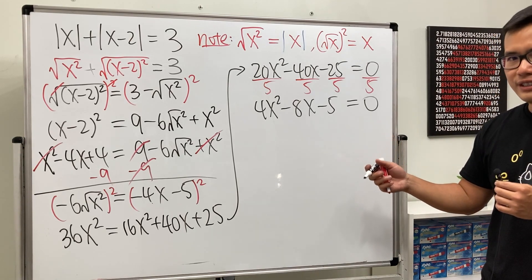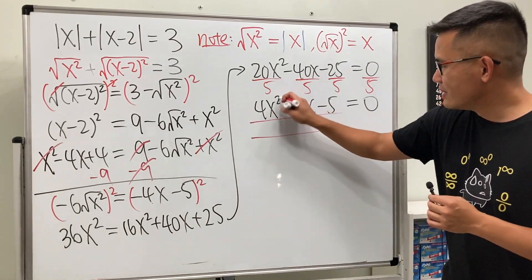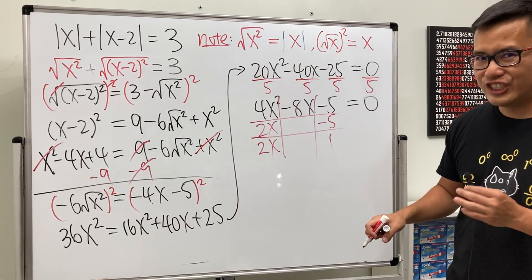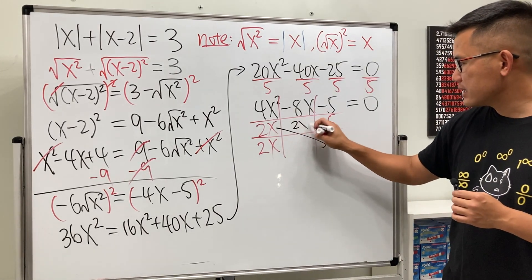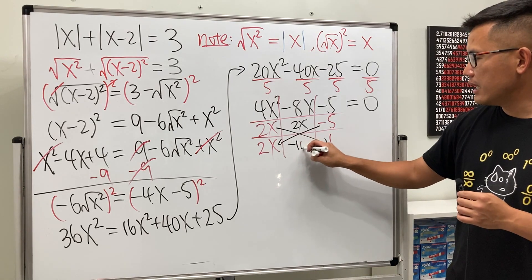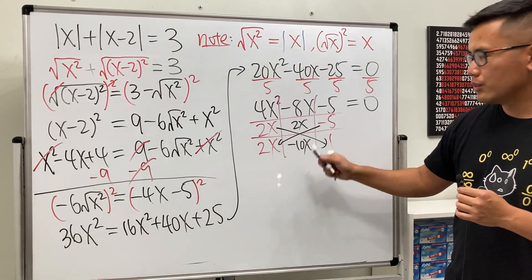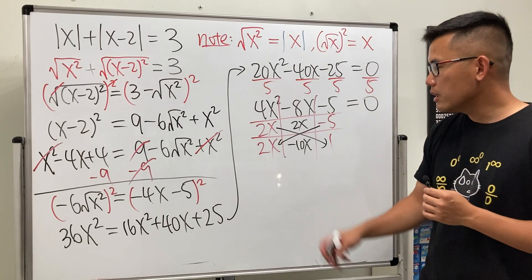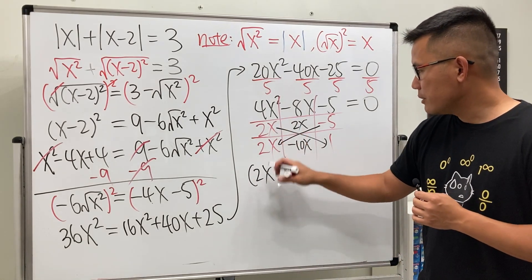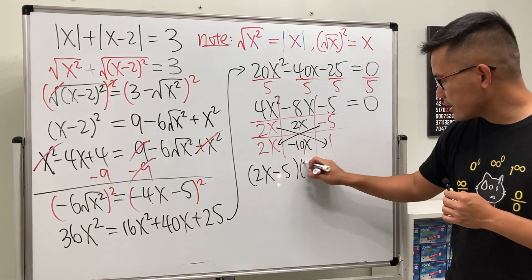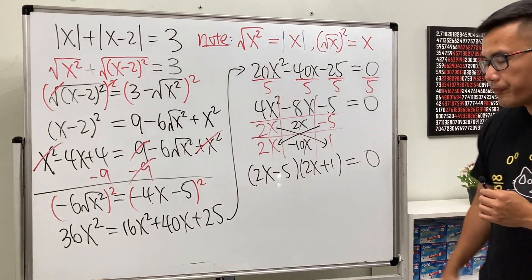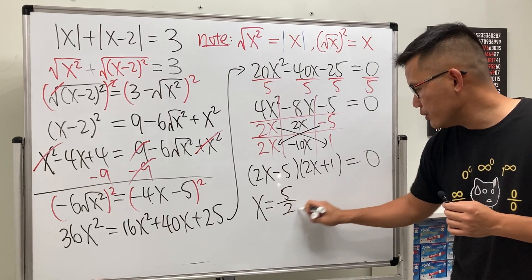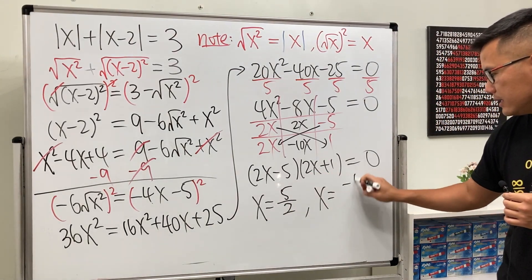Can we factor this? Yes, using the tic-tac-toe method: put 2x and 2x in two entries, −5 and 1 in the others. Check: 2x × 1 = 2x, −5 × 2x = −10x, combined gives −8x. The factoring is (2x − 5)(2x + 1) = 0, giving x = 5/2 and x = −1/2.